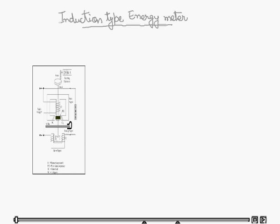The basic principle here is electromagnetic induction. When alternating current flows through two suitably located coils - current coil or potential coil - they produce a rotating magnetic field which is cut by the metallic disc suspended near the coils.